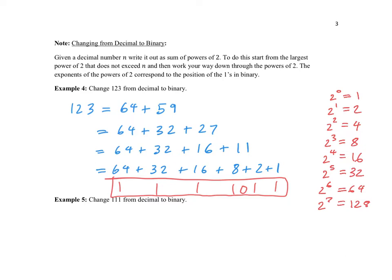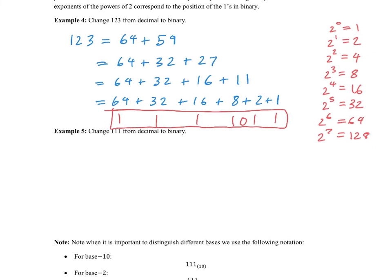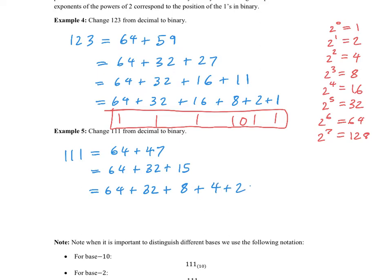Let's try one more time — converting 111 from decimal to binary. So 111 is 64 plus 47. The 47 becomes 32 plus 15. Then 15 is 8 plus 7, so plus 4 plus 2 plus 1. I've successfully written out my number as powers of 2. Every power of 2 corresponds to a 1, and every power of 2 that I missed — this time I missed 16 — corresponds to a 0.